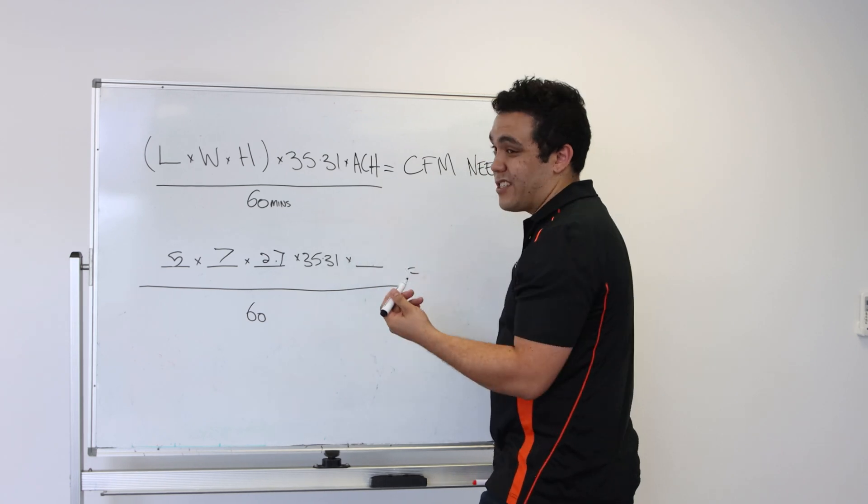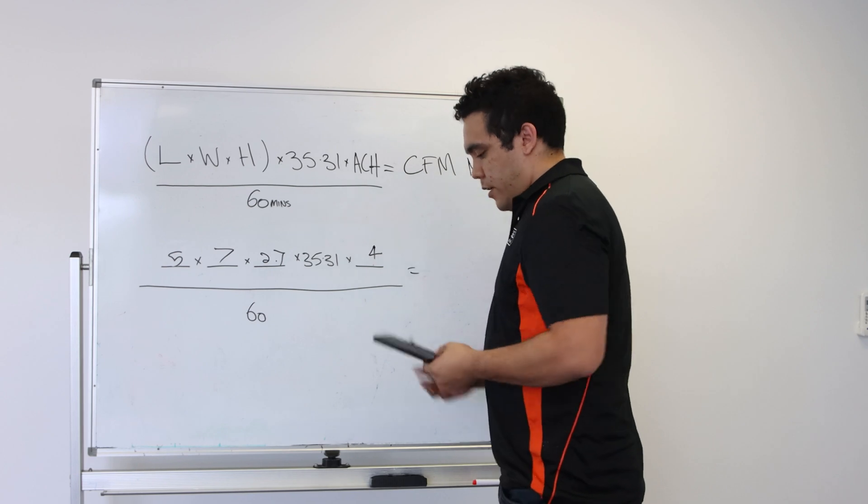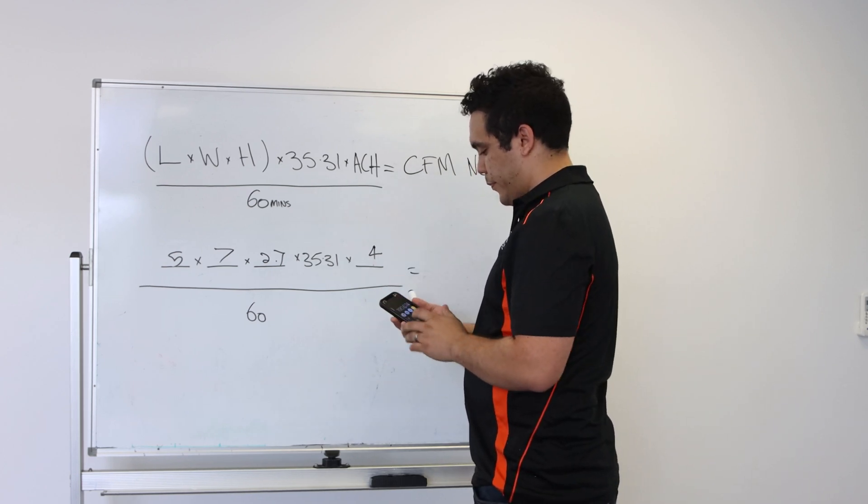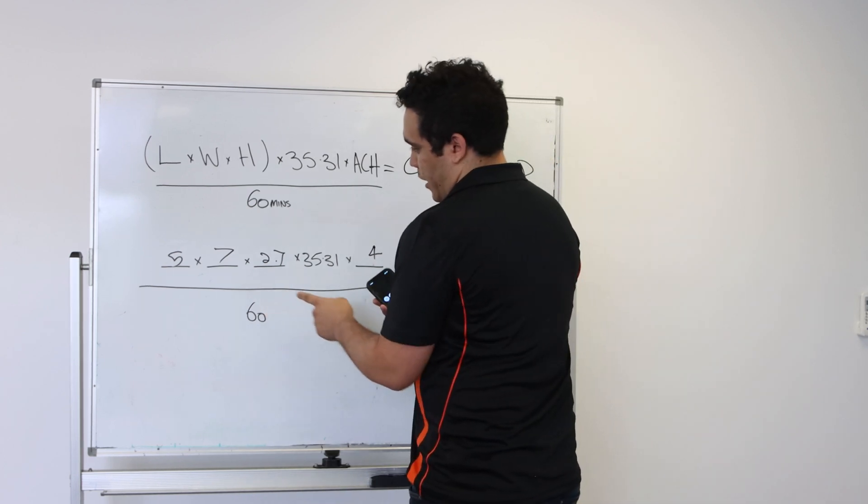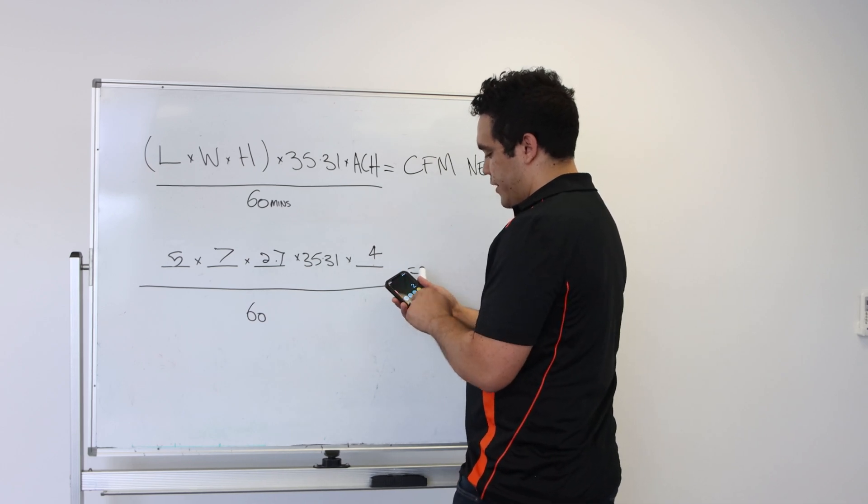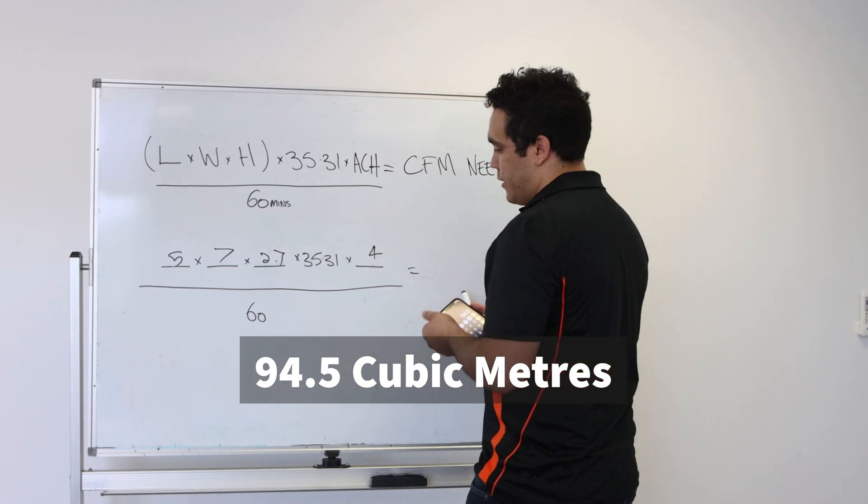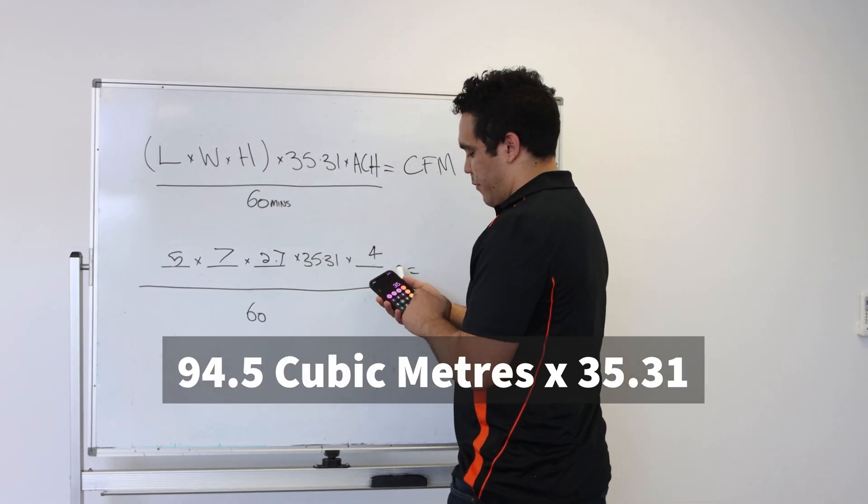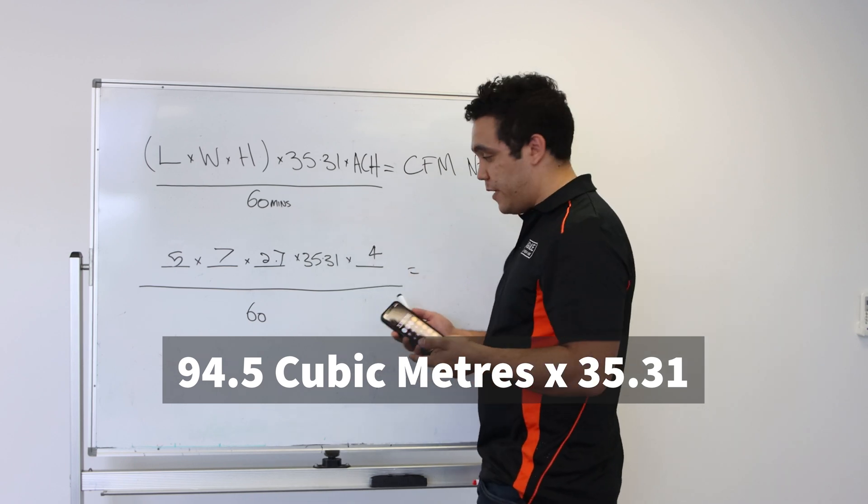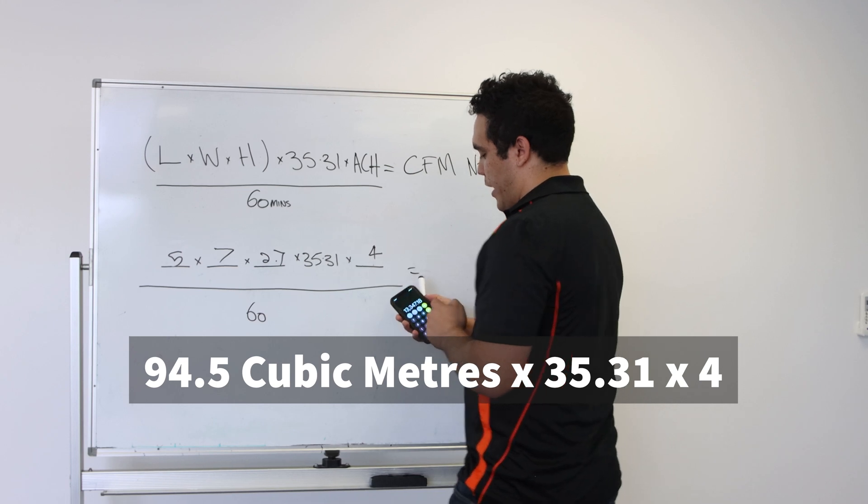So that means it would need at least four air changes per hour. So if I get my calculator out and just calculate this: 5 times 7 times 2.7, which gives us 94.5 cubic meters. And we just times that by 35.31 to get it to cubic feet. And then we multiply that by four air changes per hour.